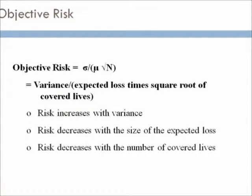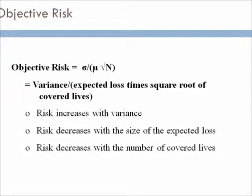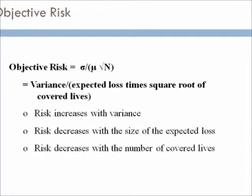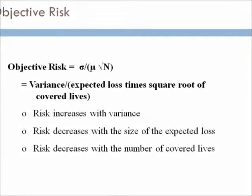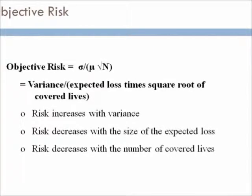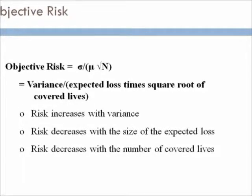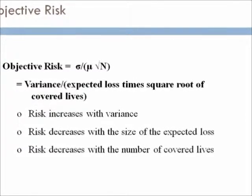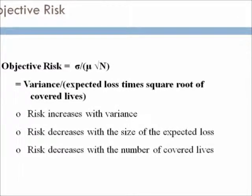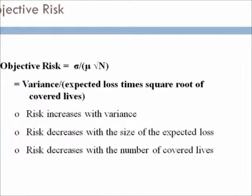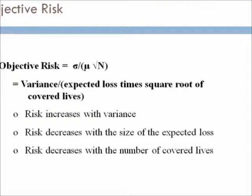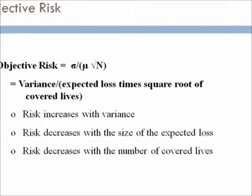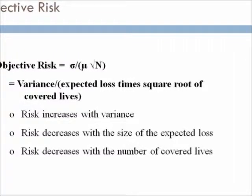From gross premium, we move to objective risk, which is the idea of measuring risk — the main theme of underwriting and risk rating. Objective risk is denoted by the formula sigma divided by mu, divided by the square root of n. Here, sigma is the variation of claims (dispersion can be measured by range, variance, or standard deviation).